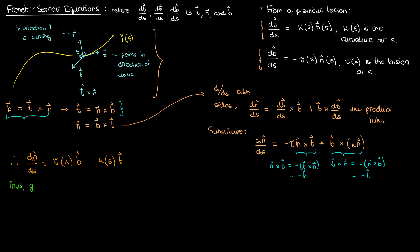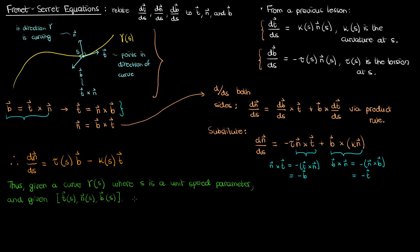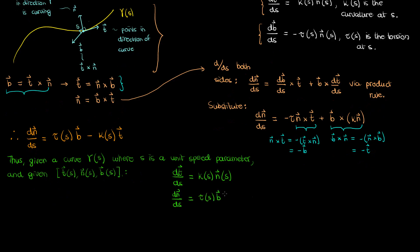So overall, given a curve gamma parametrized by arc length s, and given the three vectors — the unit tangent t, the unit normal n, and the unit binormal b — each depending on position s along the curve, the Frenet-Serret equations are: dt/ds equals kappa times n, dn/ds equals tau times b minus kappa times t, and db/ds equals negative tau times n.